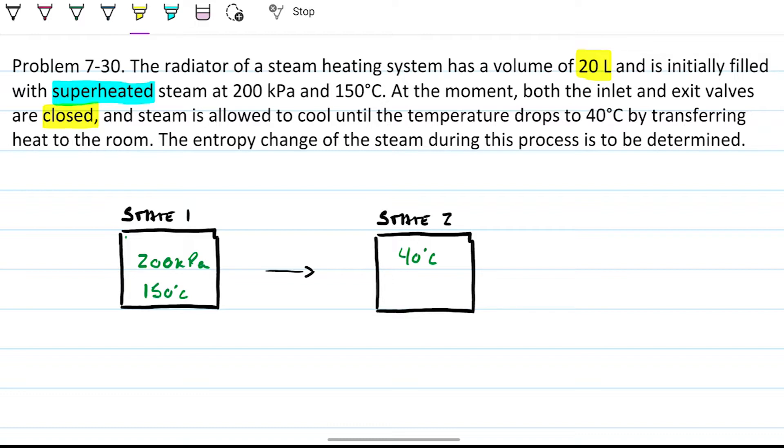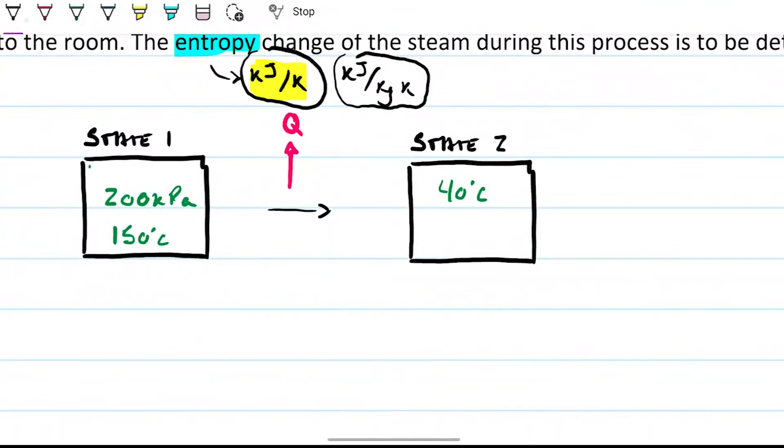Steam is allowed to cool until it reaches 40. So we're transferring heat, we're not transferring any mass. There's only heat leaving from state one to state two, and we need to find the entropy change. Entropy is measured in kilojoules per unit of temperature Kelvin. So we're looking for an answer either in kilojoules per Kelvin or in kilojoules per kilogram Kelvin. They give us the volume, so we most likely will be using this one here.